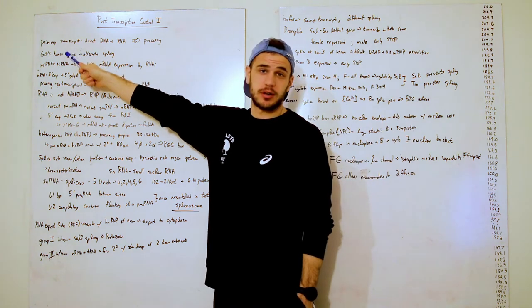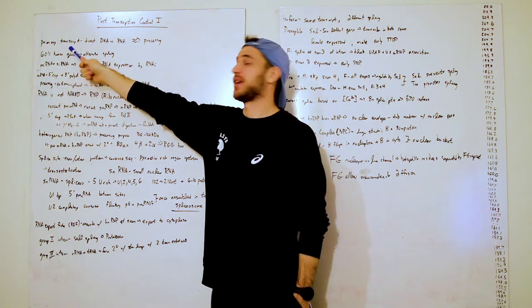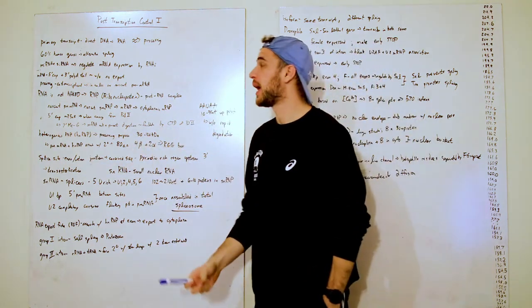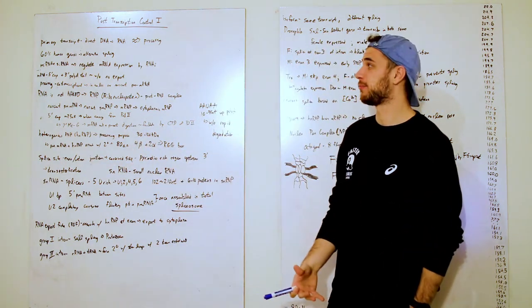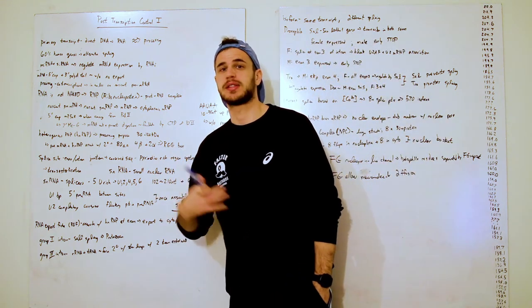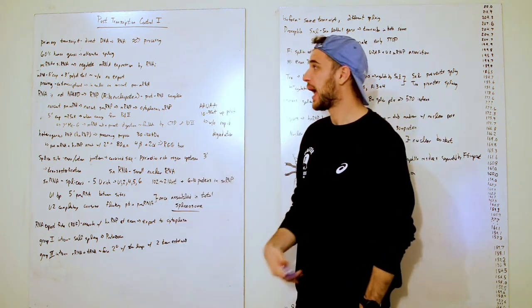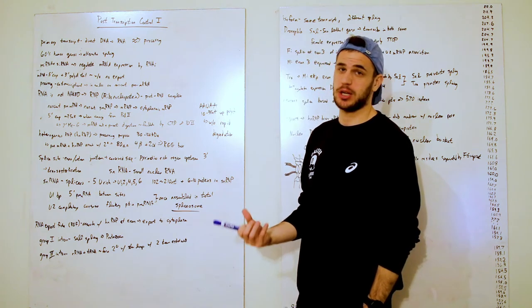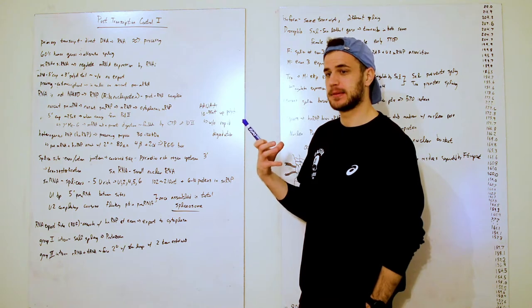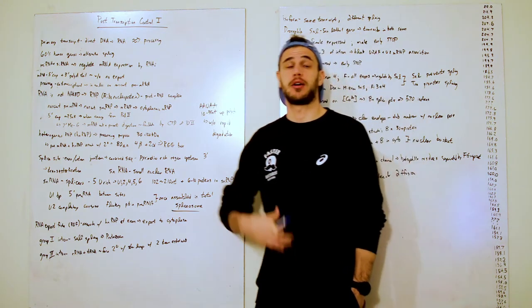And so one thing to just remember, because I'm going to say this a lot, is transcripts. A primary transcript is what goes from the DNA to the RNA, and then that undergoes processing. And so we all recall, we've got this thing called alternative splicing, and 60% of the human genome is alternatively spliced.